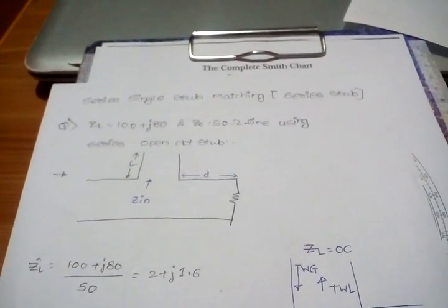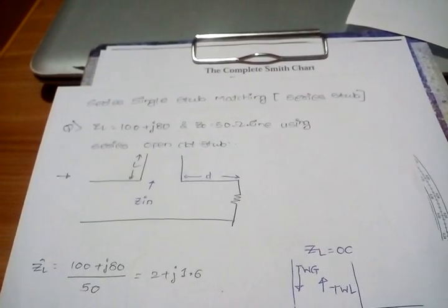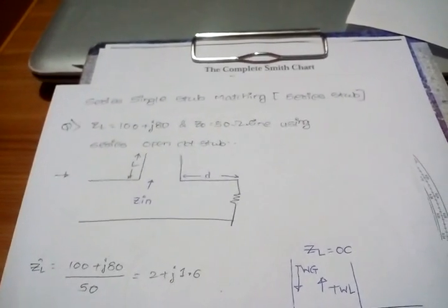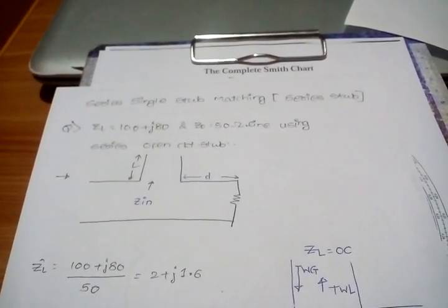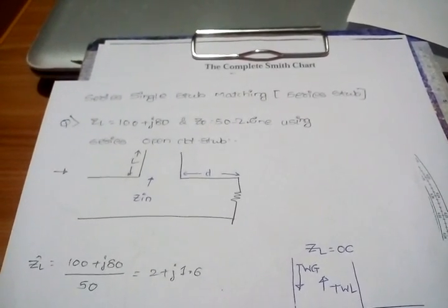In single stub there are four types: first is series open, series close, parallel open, and parallel close.